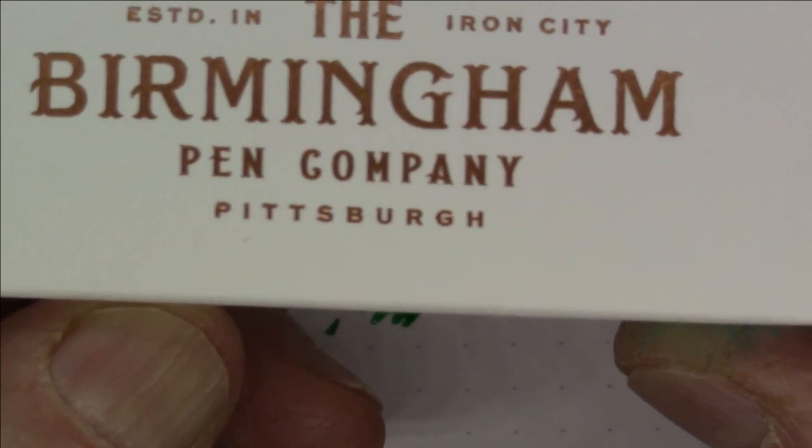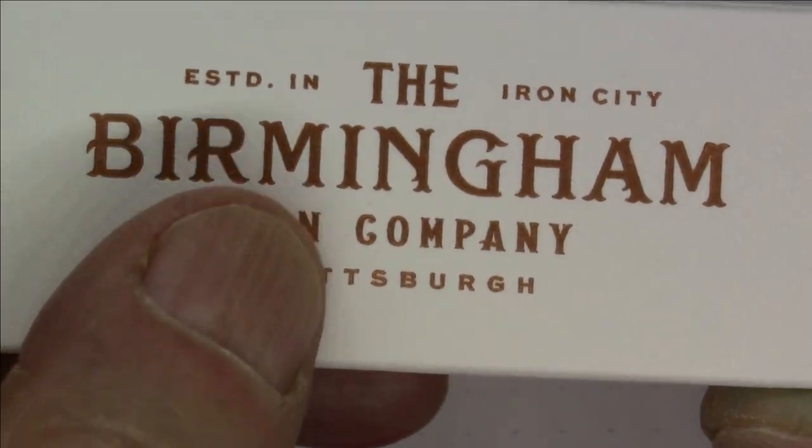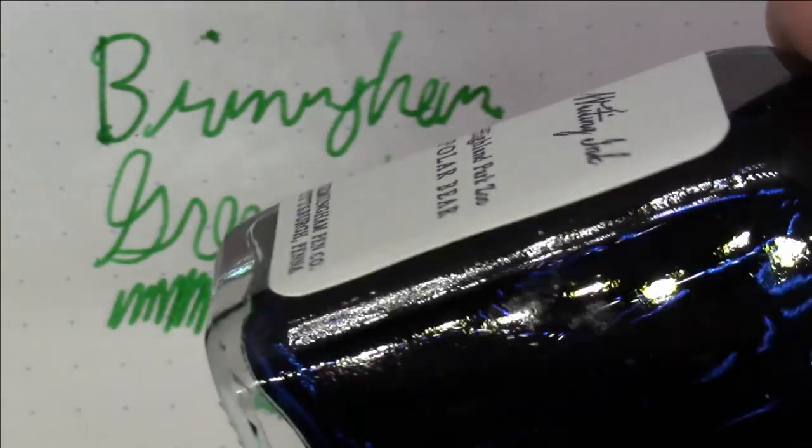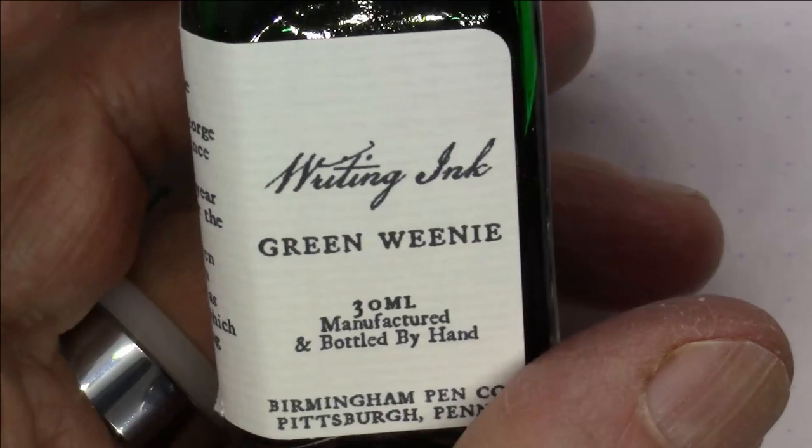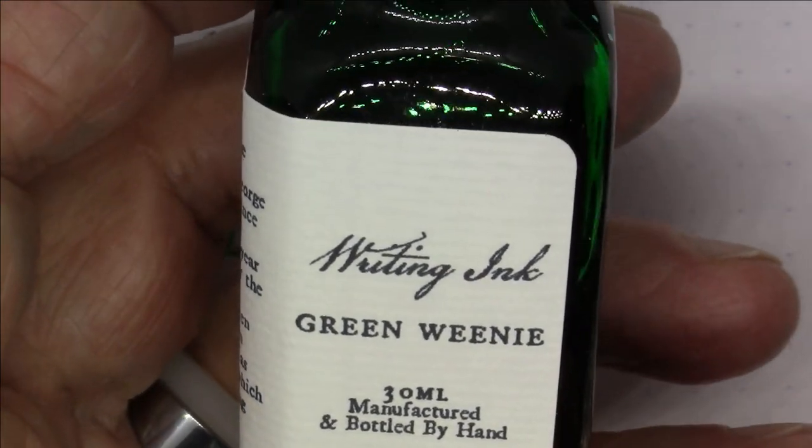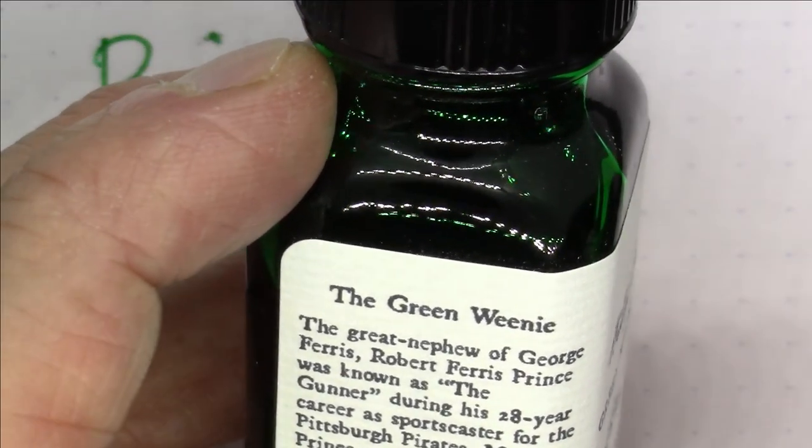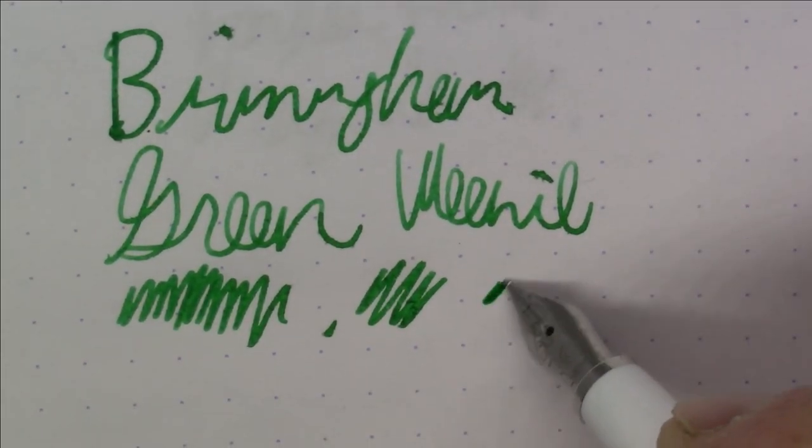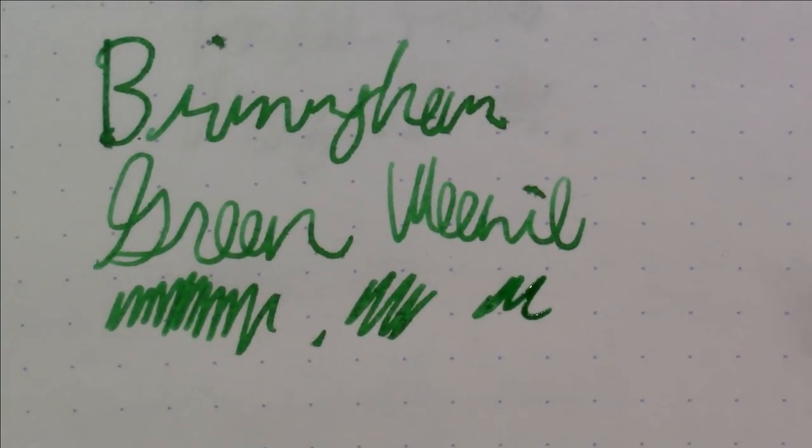Birmingham is really kind of upping the game on the packaging of these things too. They come in these really nice boxes with textured paper and this really nice metallic foil lettering on it. This is in a smaller 30 milliliter bottle, and these are all made and bottled by Birmingham Inks.